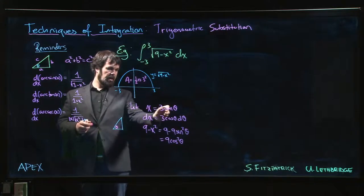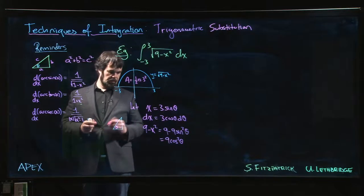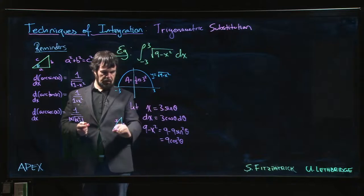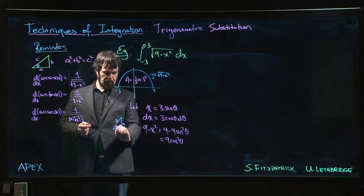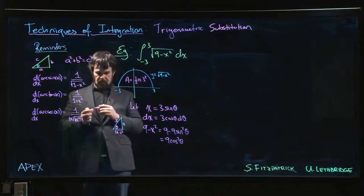okay, if that angle is theta and if sine theta is x over 3, then we can say that's x, that's 3, opposite of our hypotenuse. We know that the remaining side must be 9 minus x squared, which of course is the thing that we want.